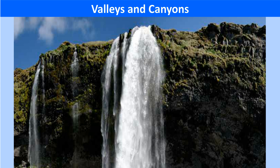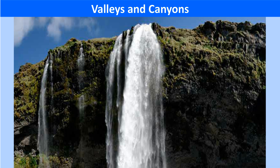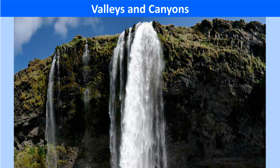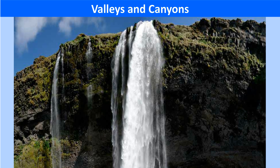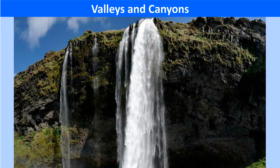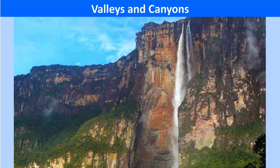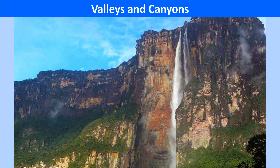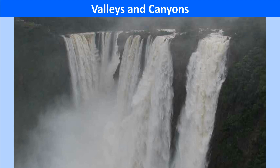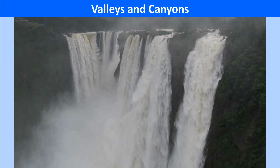A waterfall is formed when a river falls from a great height over hard rocks or down a steep valley. Sometimes it encounters extremely hard rocks in the riverbed, and the softer rocks get eroded easily while the river jumps over the bands of hard rocks, forming rapids. The Angel Falls in Venezuela at a height of 979 meters is the highest waterfall in the world, while the Jog or Gersoppa waterfall on river Sharavati in Karnataka at 253 meters is the highest waterfall in India.